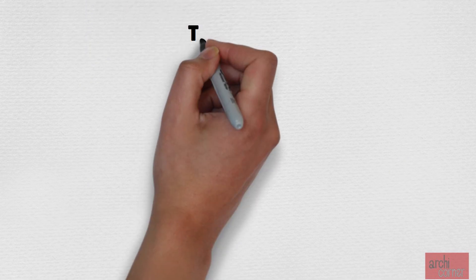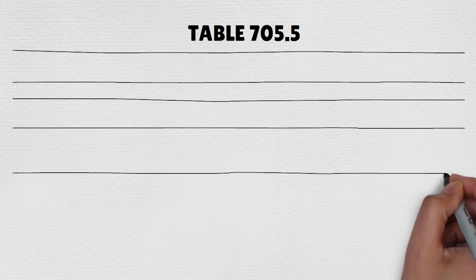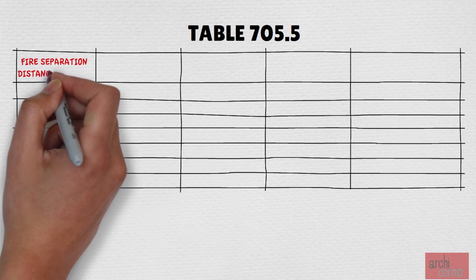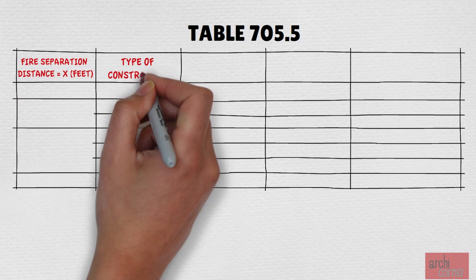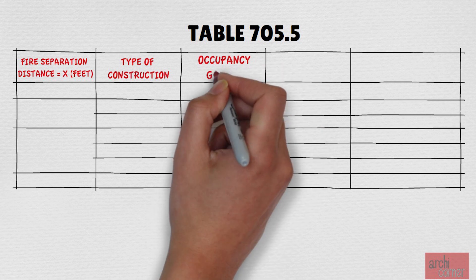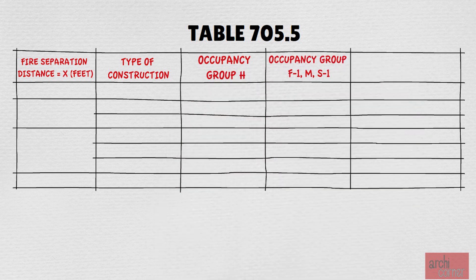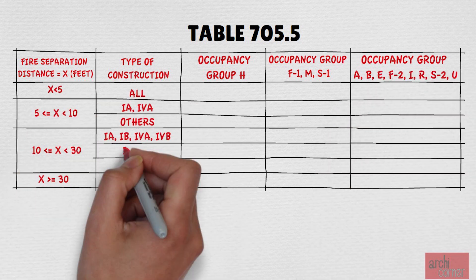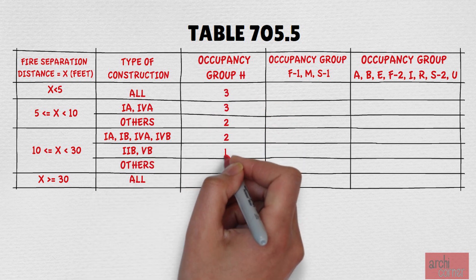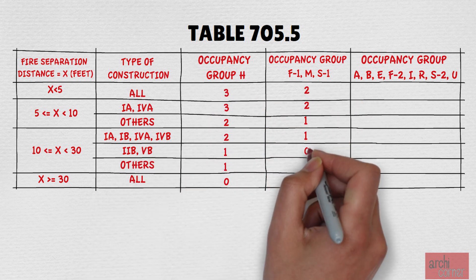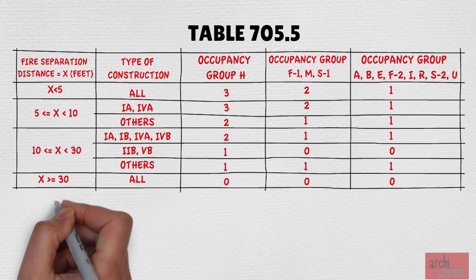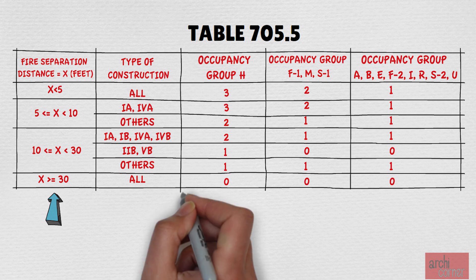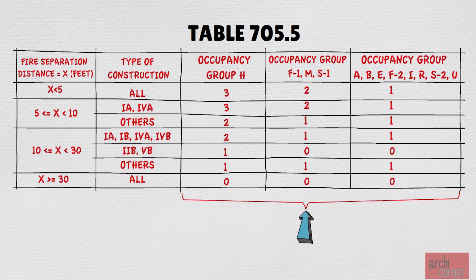Separation requirements can be found in IBC Section 705 and Table 705.5, which notes the required fire resistance rating required for walls based on their proximity to either the actual property line or the assumed property line — I will discuss this assumed property line in a minute. Be aware that there are a few footnotes not shown on this table, so be sure to look at the IBC for the full table. This chart is relatively straightforward: the column on the left notes the distances between the building and the property line, and the other columns note the fire rating required, which depends on the type of construction and occupancy group.